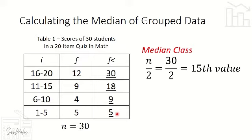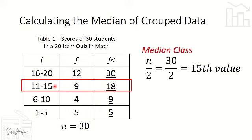Students 1 through 5 fall in the 1–5 interval, students 6 through 9 fall in the 6–10 interval, and students 10 through 18 fall in the 11–15 interval. Since the 15th value falls within the 10th to 18th range, the median class is 11 to 15.